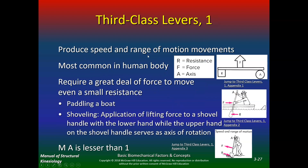Third class levers produce speed and range of movement and are the most common in the human body — that's a great quiz question. The axis, force, and resistance arrangement: for example, rowing a boat — here's the axis, here's the force, and there's the resistance. Rowing is tough — not very efficient. Shoveling is another example: axis, force, and resistance, and shoveling is hard. The mechanical advantage is less than one, meaning the human body is not very efficient. It requires a great deal of force to move even a small resistance — that's why working out is hard.